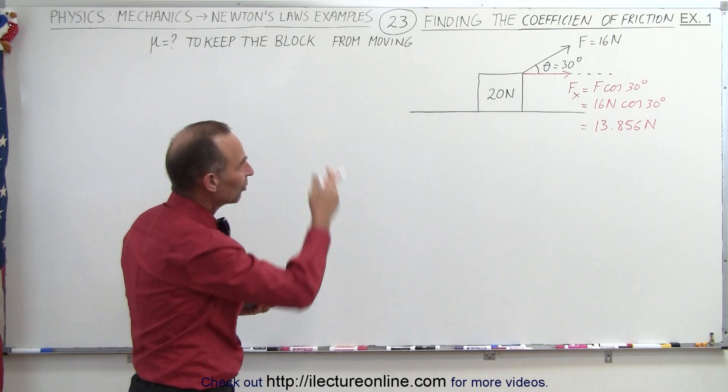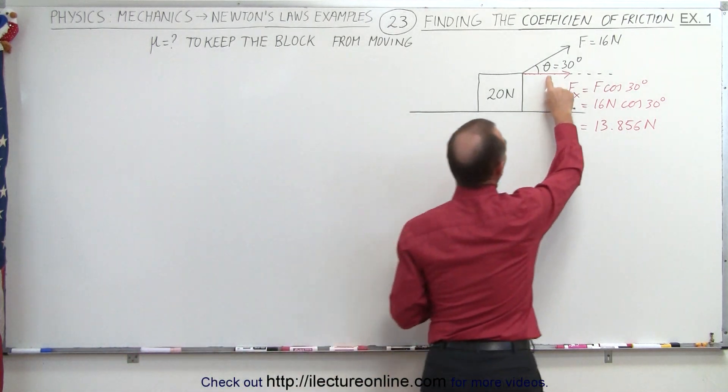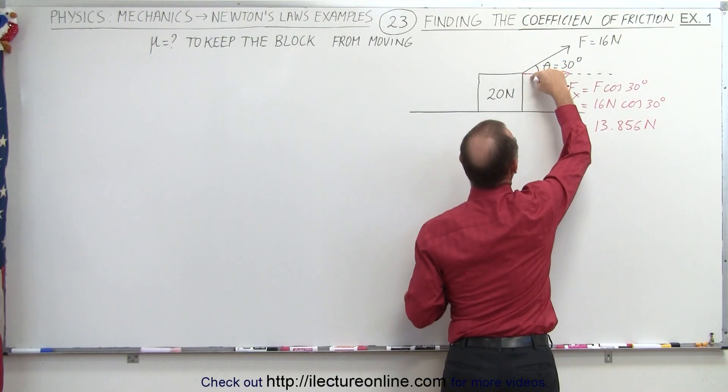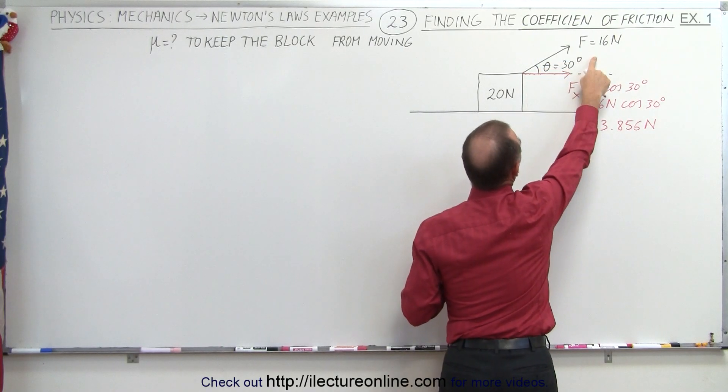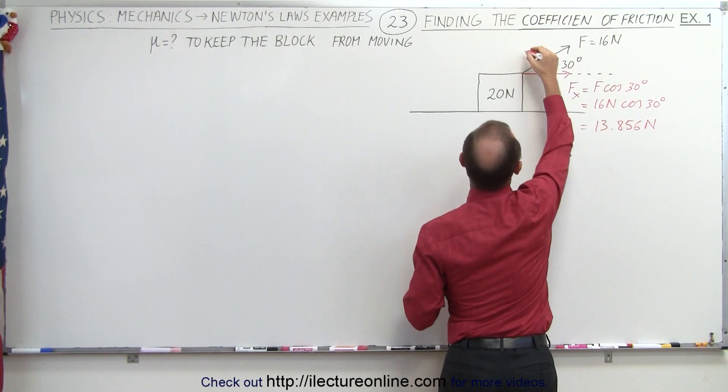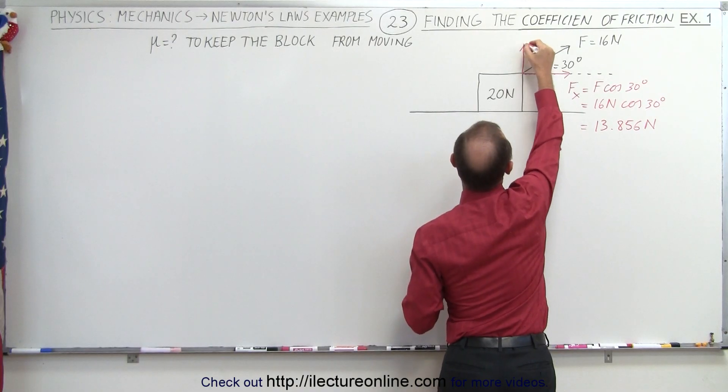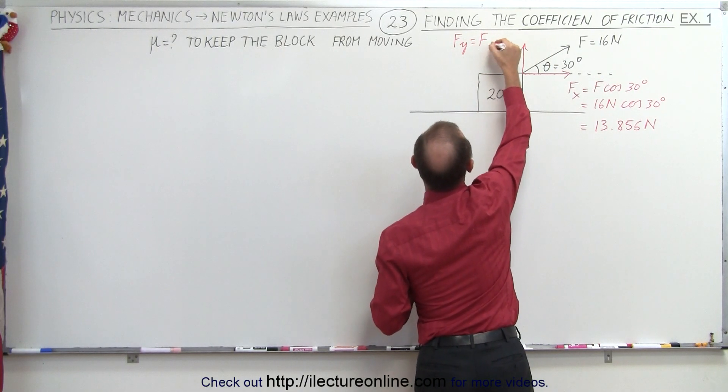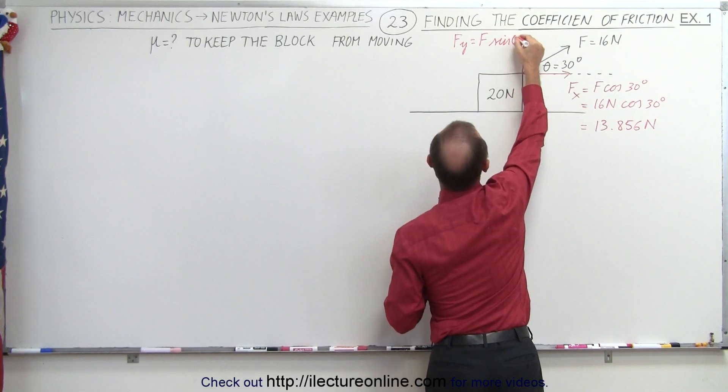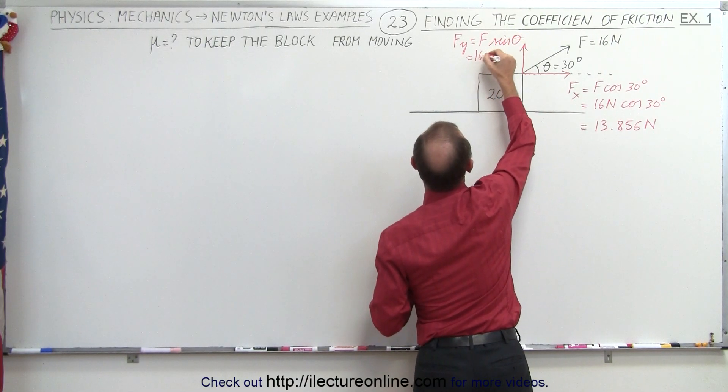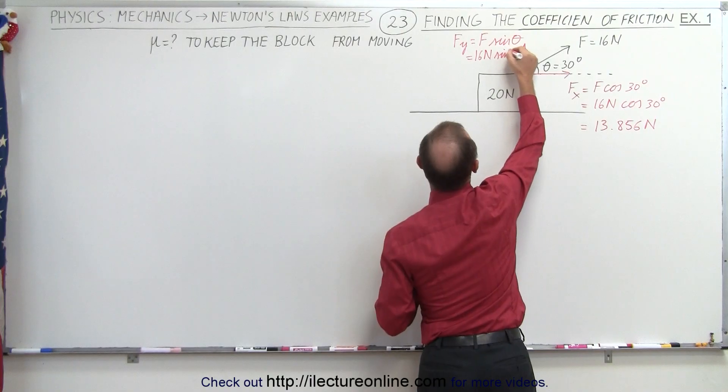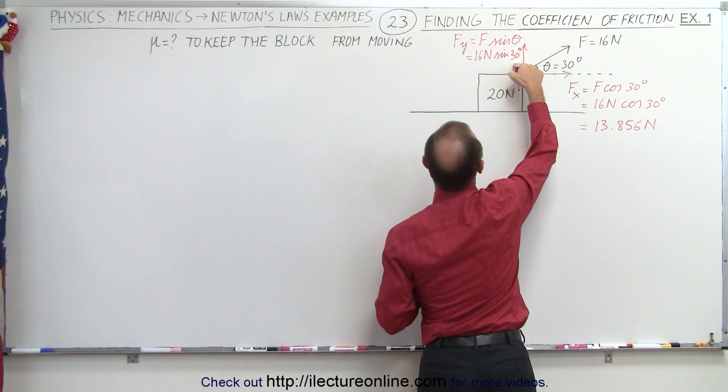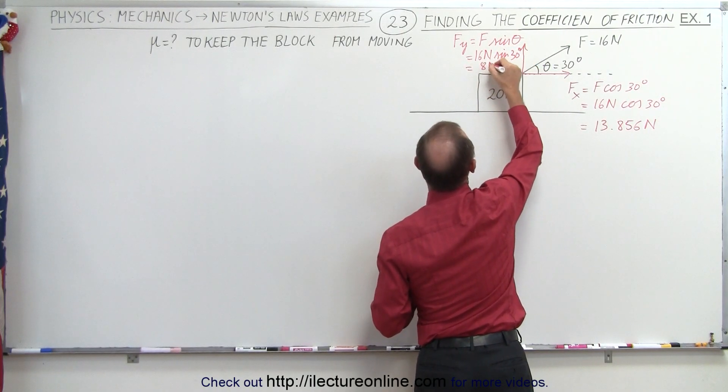In the y direction, since the angle is 30 degrees, that's the opposite side to the angle, which would be 0.5 times 16. So in the y direction we have F_y, which is equal to F times the sine of theta. That would be 16 newtons times the sine of 30 degrees, which equals 8 newtons.